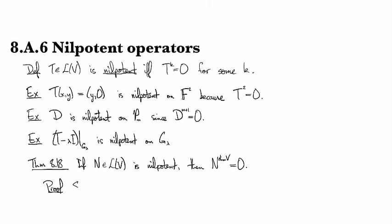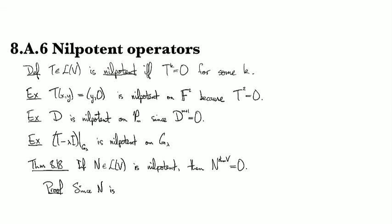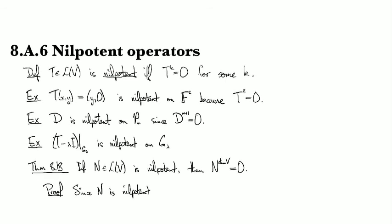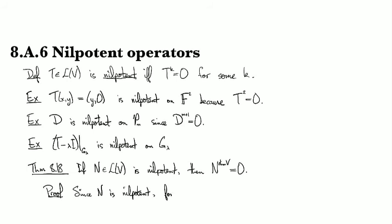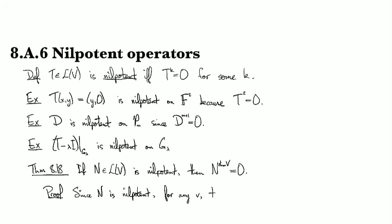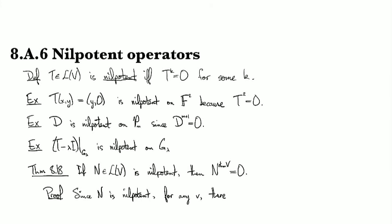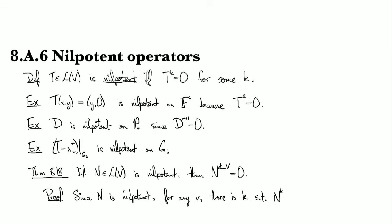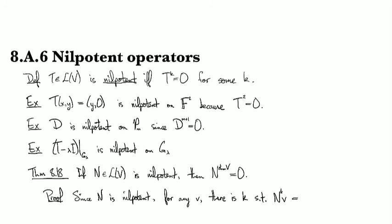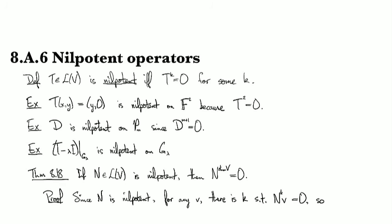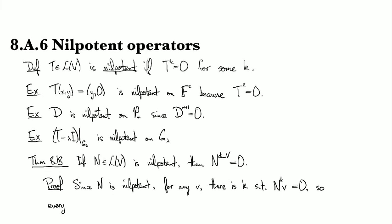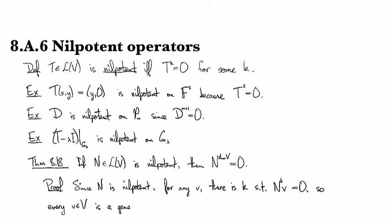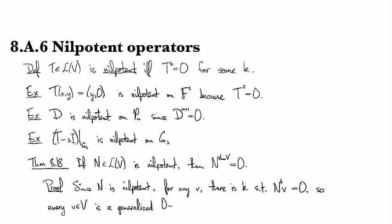For the proof, since N is nilpotent, for any v, there is some non-negative integer k such that N to the k applied to v gives you zero. And so this means that every element of V is a generalized zero eigenvector.